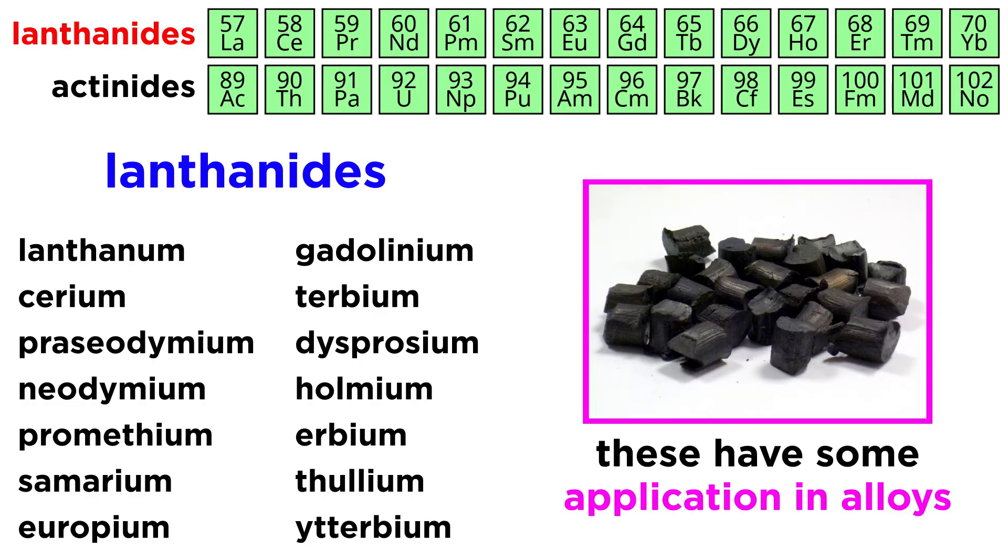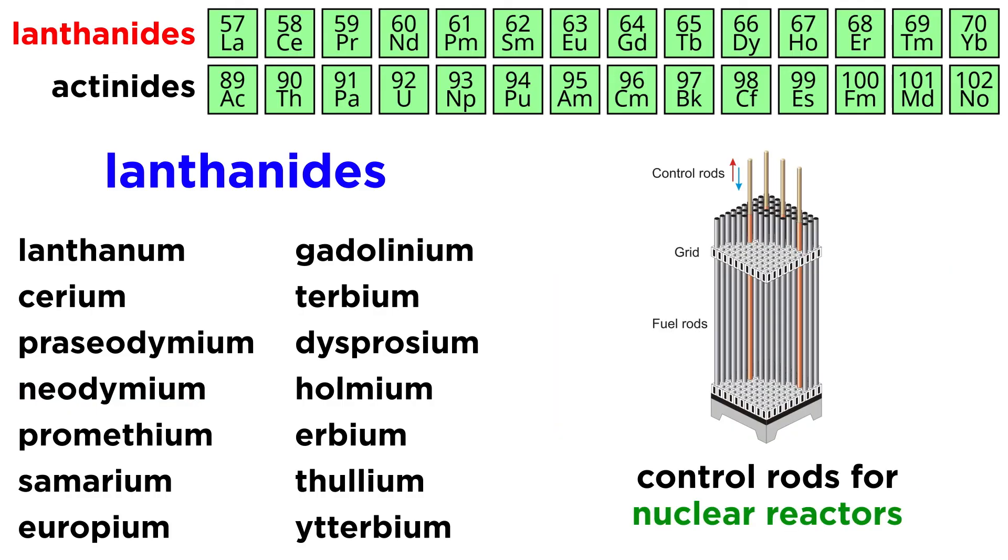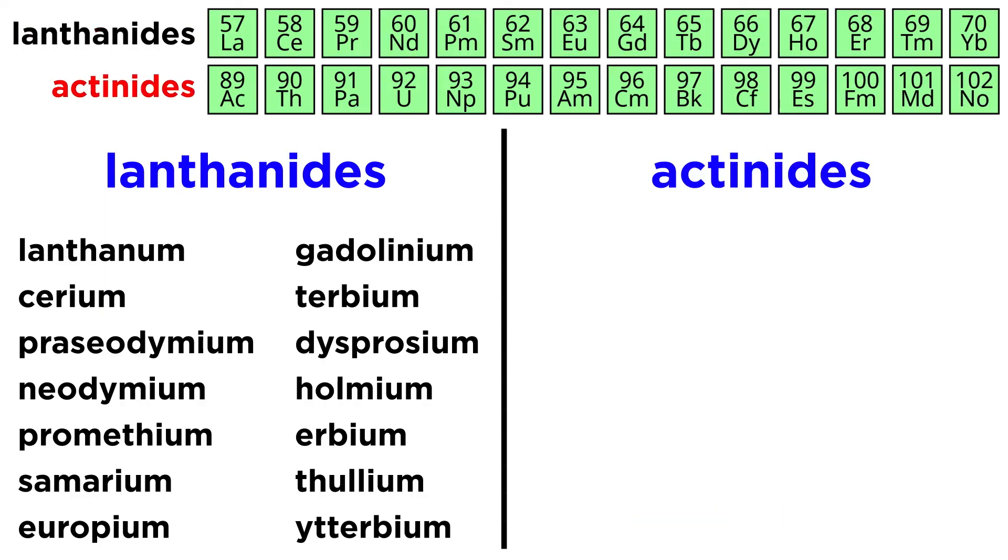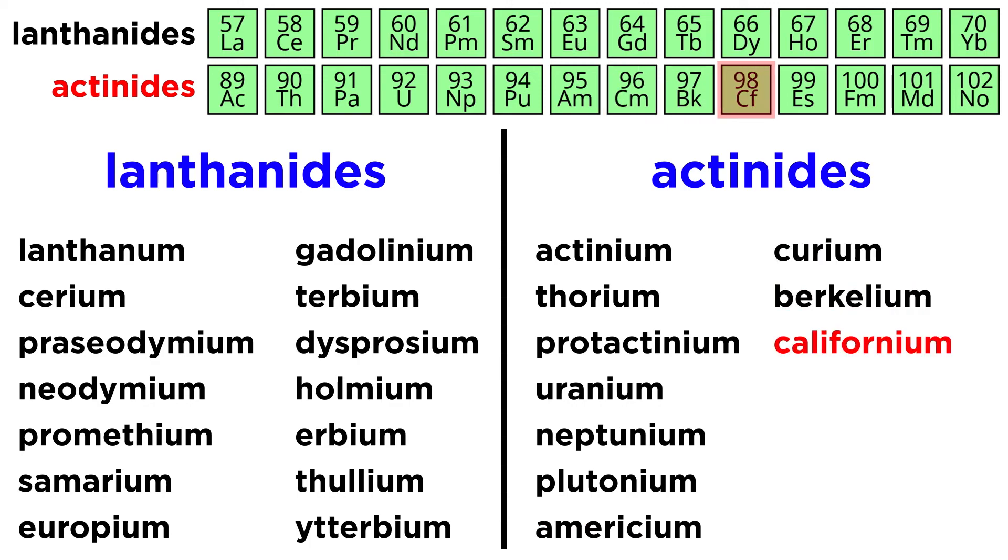The lanthanides are still small and stable enough for some of them to have practical applications, primarily in alloys, but additionally neodymium glass is used to make lasers, and others are used in control rods for nuclear reactors. Then finally the second row in the F block is called the actinides, because the first element in this row is called actinium. After that we have thorium, protactinium, uranium, neptunium, plutonium, americium, curium, berkelium, californium, einsteinium, fermium, mendelevium, and nobelium.